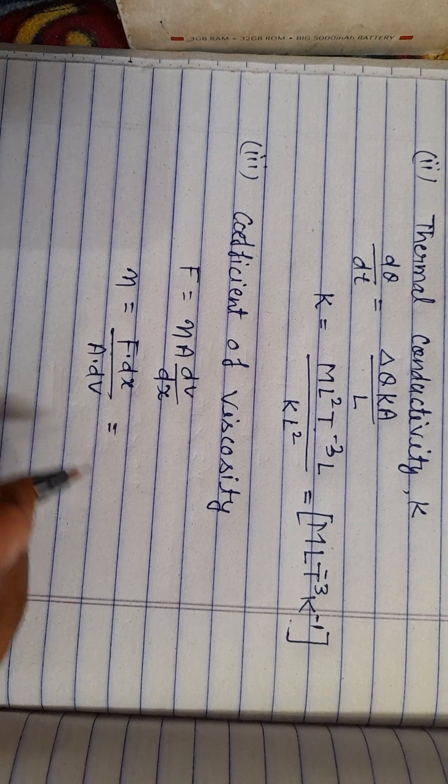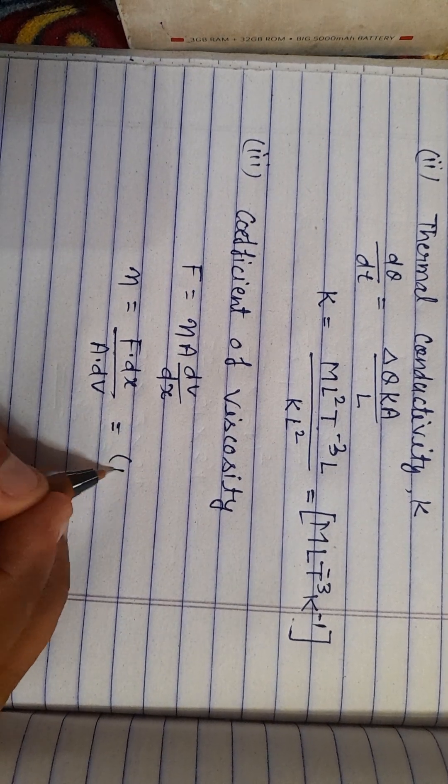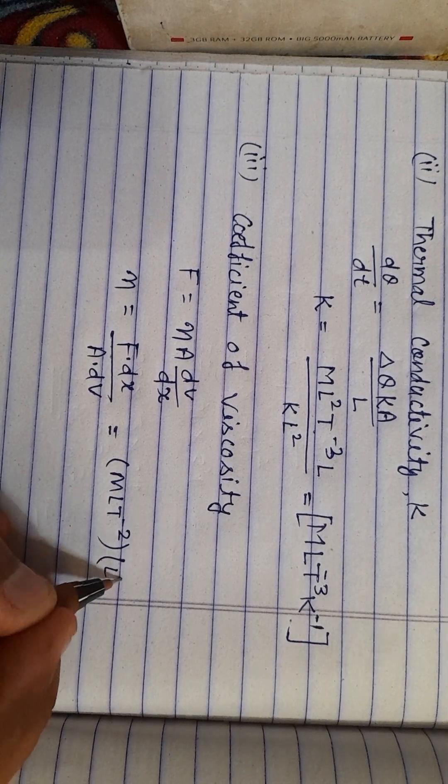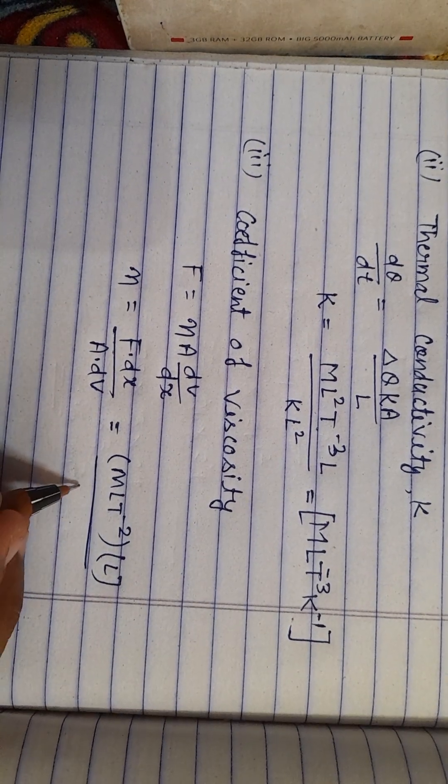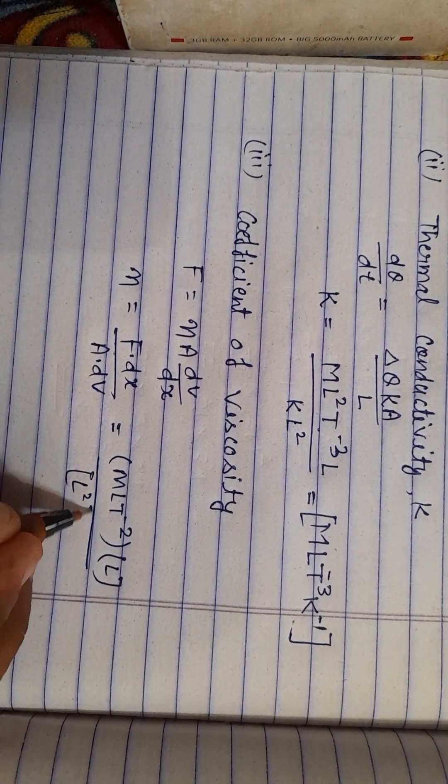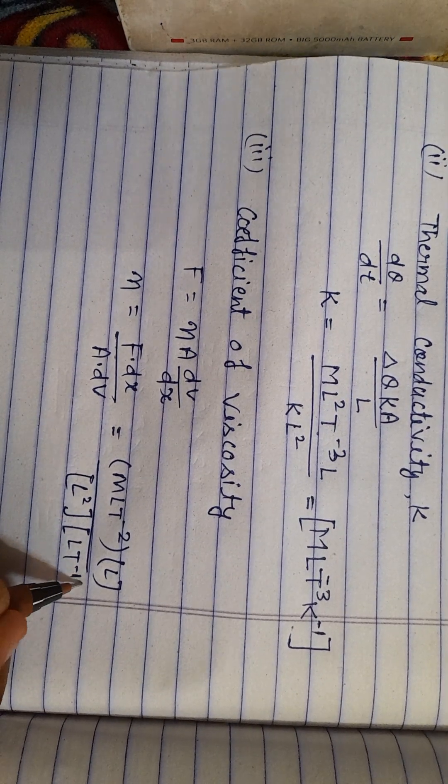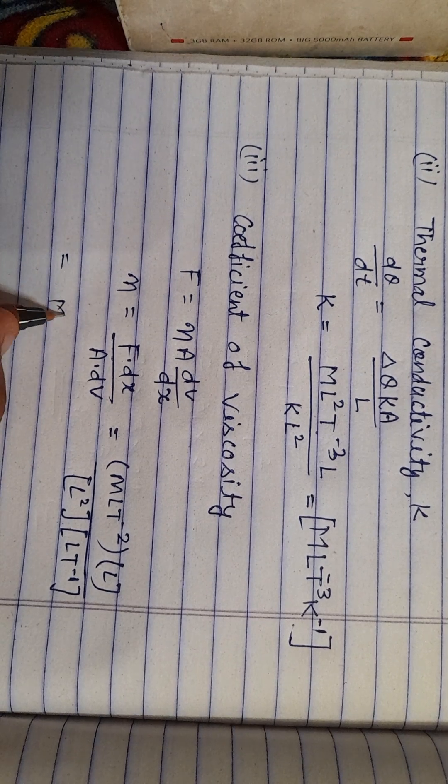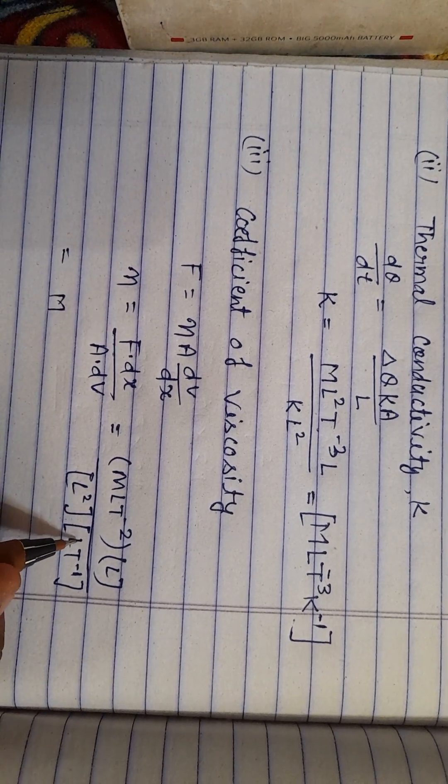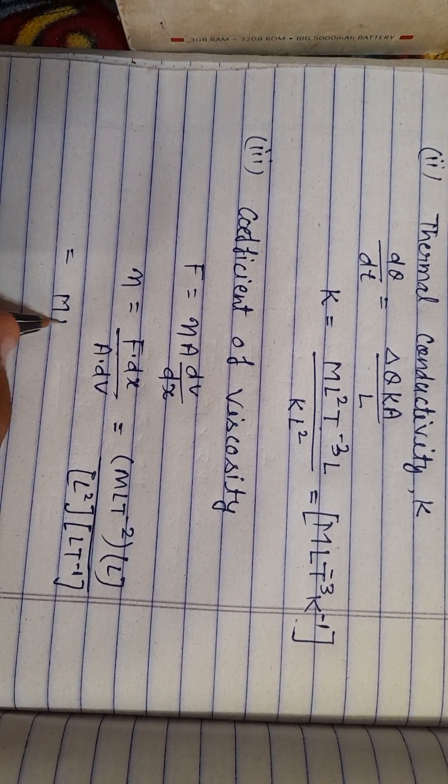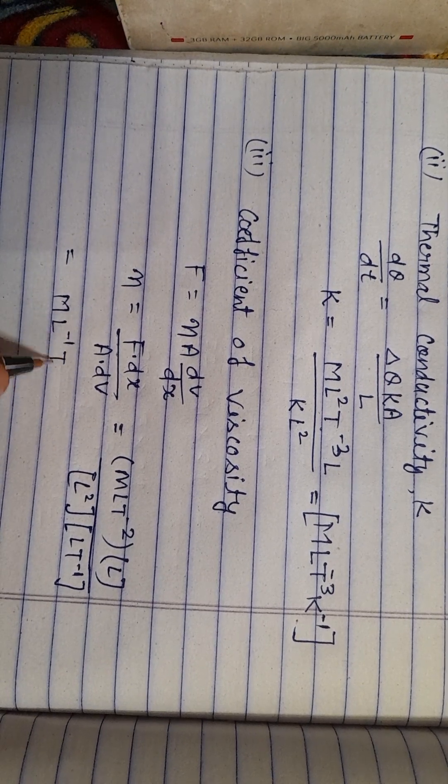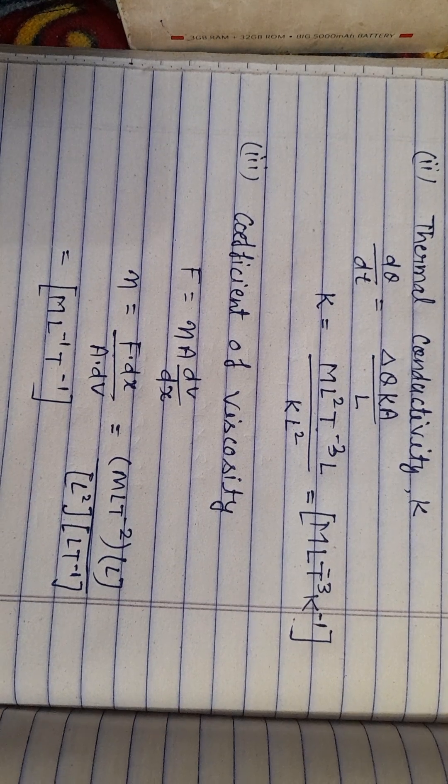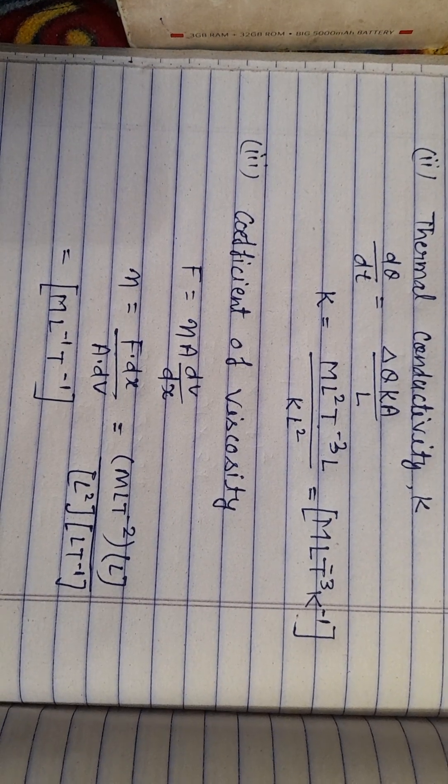This will be M L T minus 2 times L upon L squared times L T minus 1. M will be the same, and L squared minus L cubed gives L minus 1, T minus 1. So these are the dimensions of coefficient of viscosity.